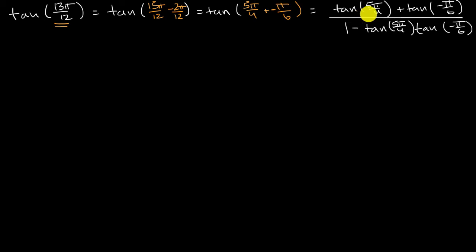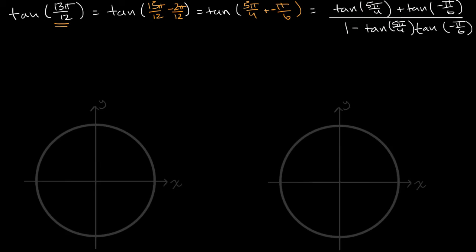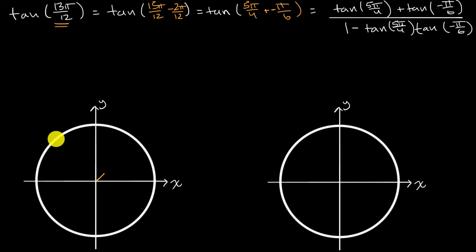We can break out our unit circles to figure out what these things are. I have pre-put some unit circles here. Let's first think about what 5π/4 looks like. π/4 is associated with 45 degrees. 2π/4 gets you here, 3π/4 gets you there, 4π/4 — which is π — gets us over there, and 5π/4 gets us right about there.